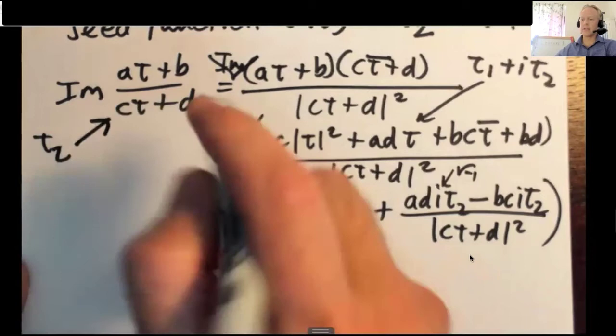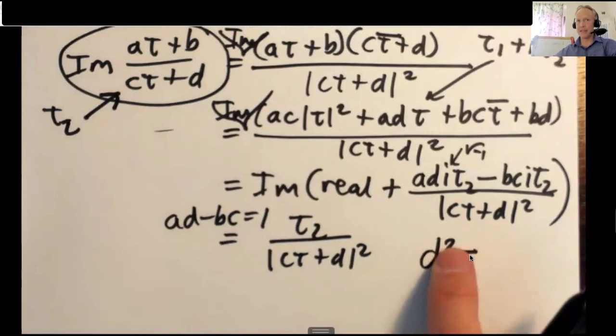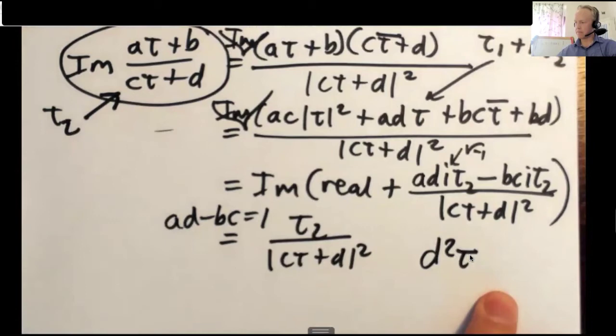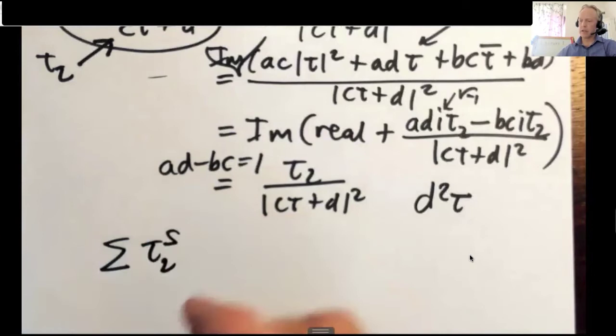So we see that tau two itself transforms into this whole thing. This thing is called form because this is a form. So this is a differential form and this has a transformation property. And this is a function of tau that has a transformation property. And you can combine them to make an invariant volume element on the upper half plane.